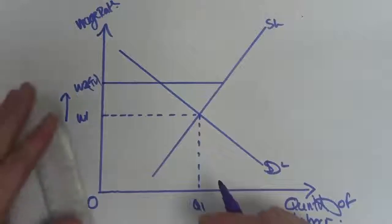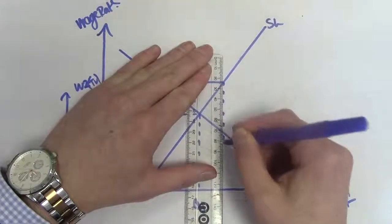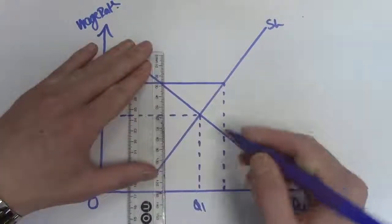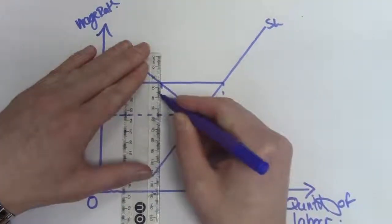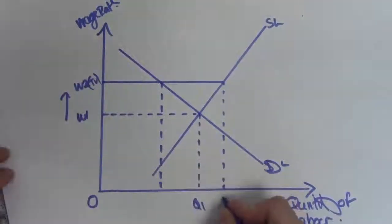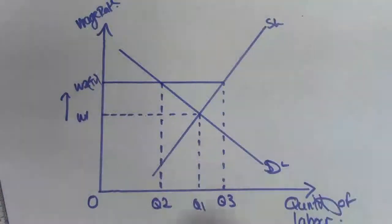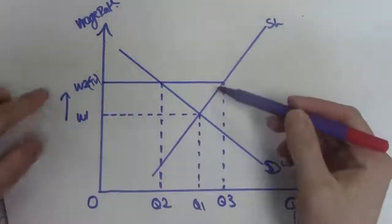Do your dashed lines now to show the impact this is having on both supply and demand. This becomes Q3 and this becomes Q2. Now let's study this diagram for a second.